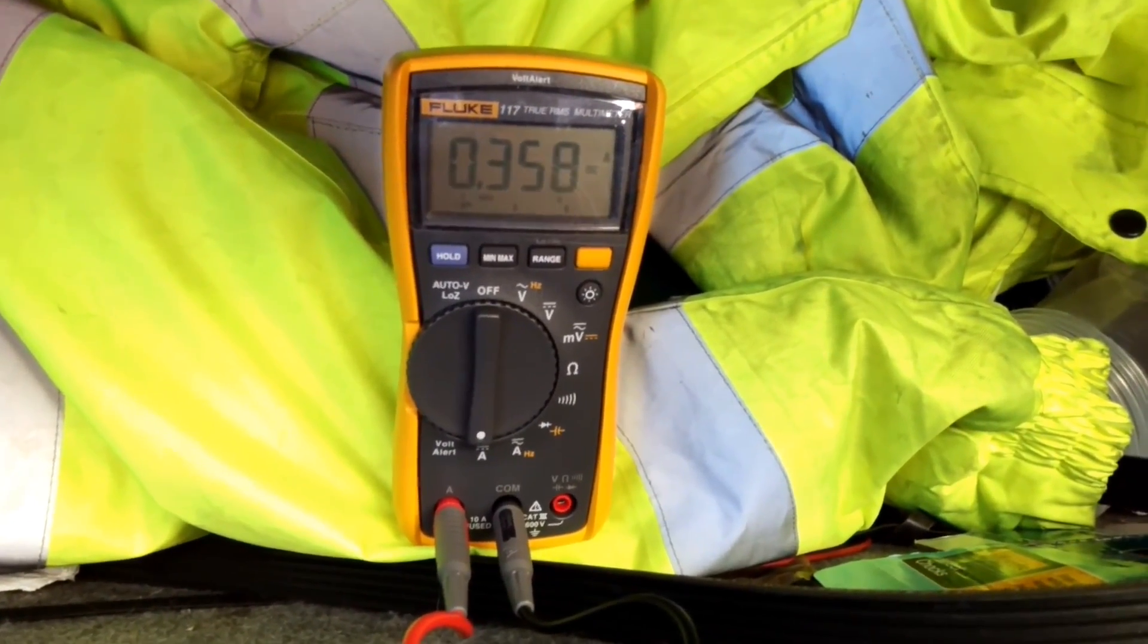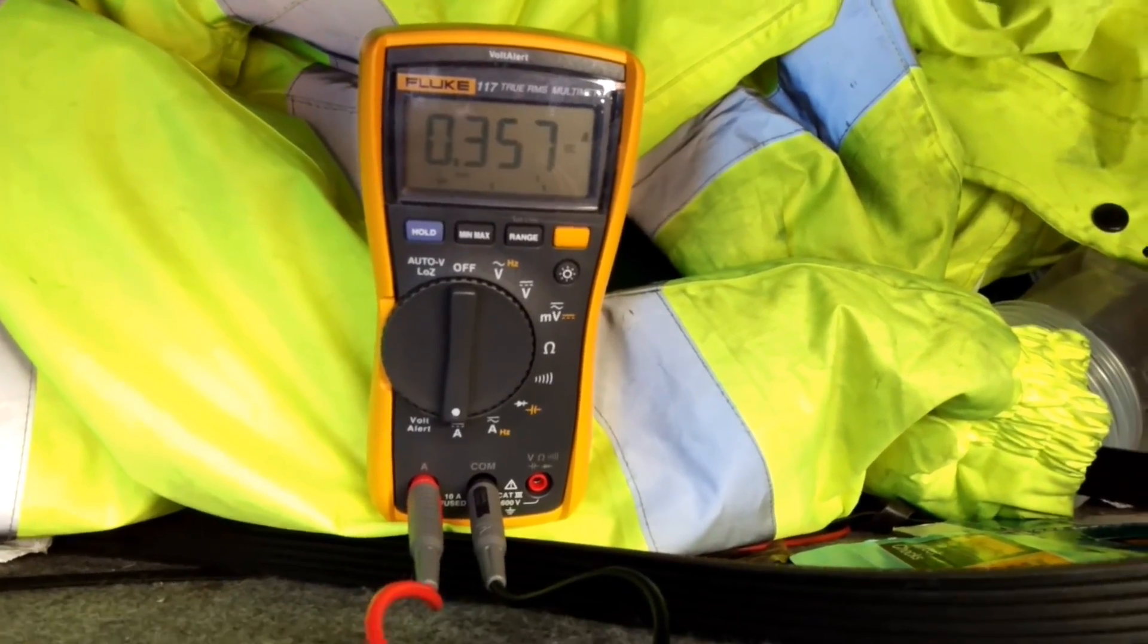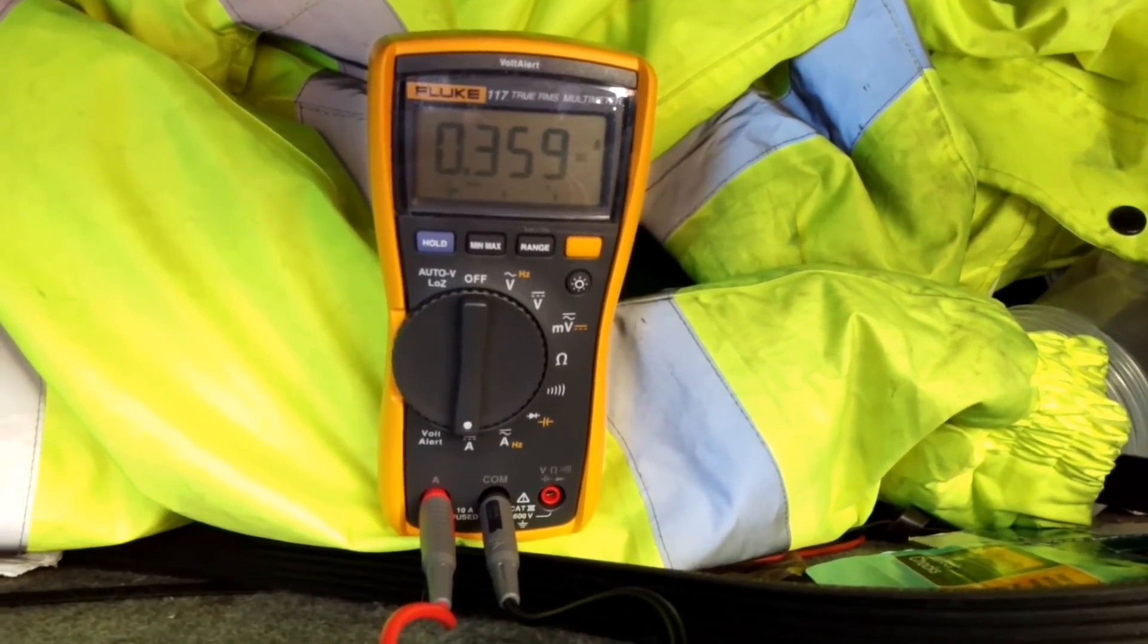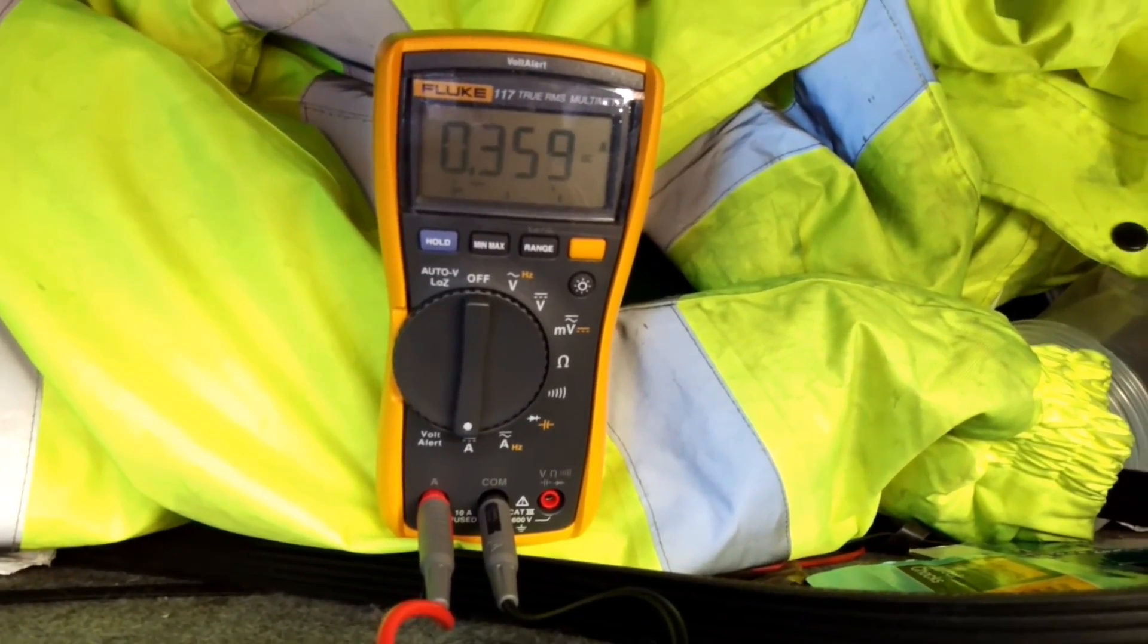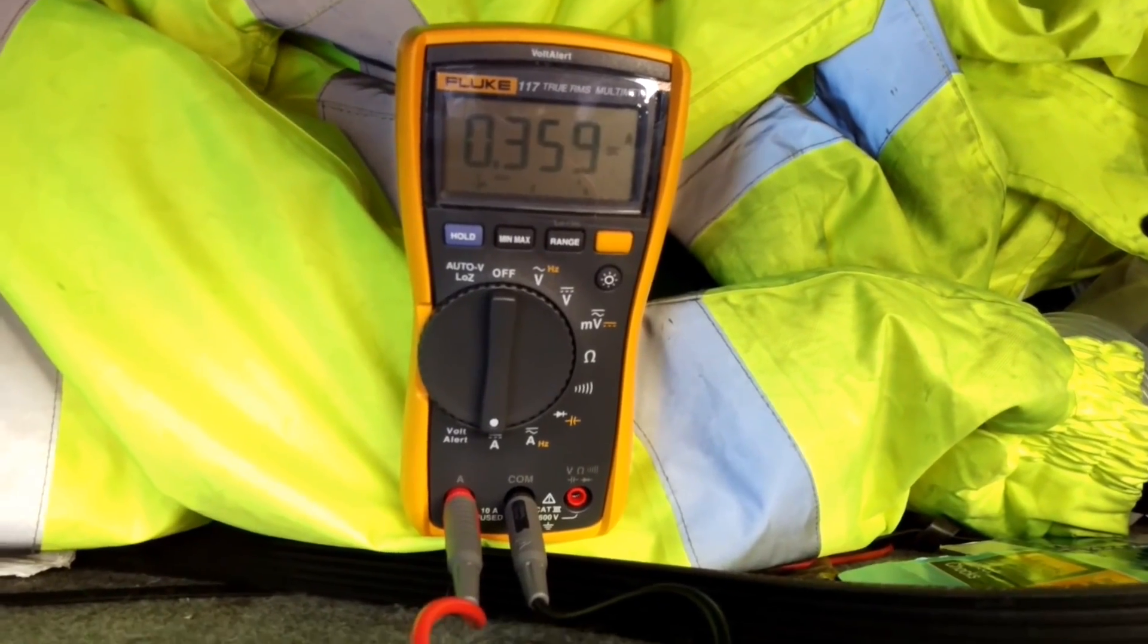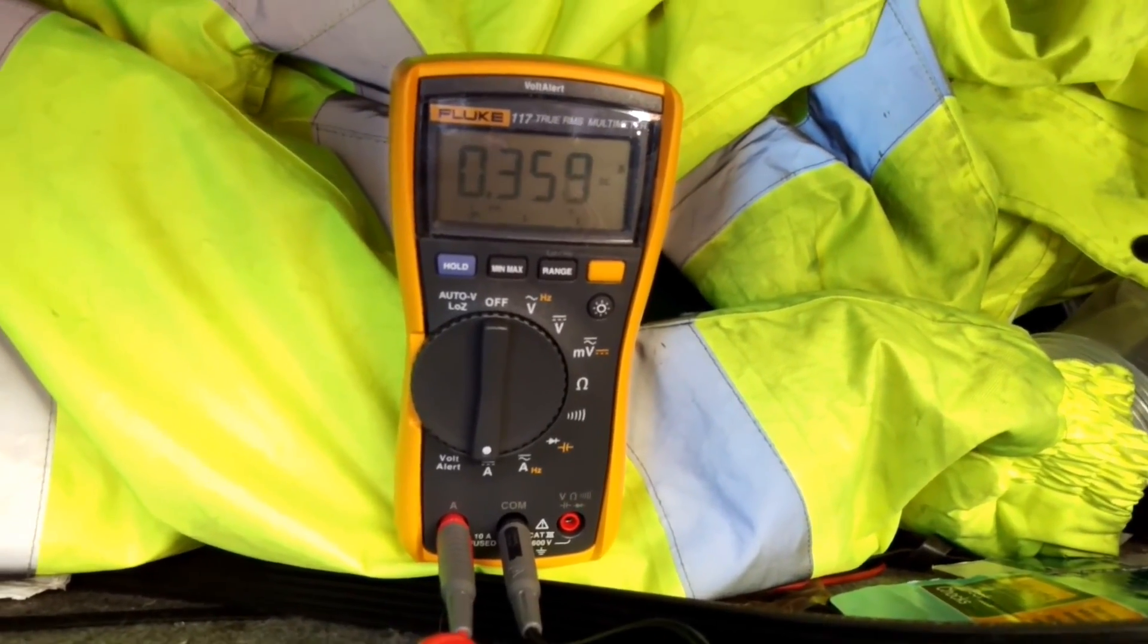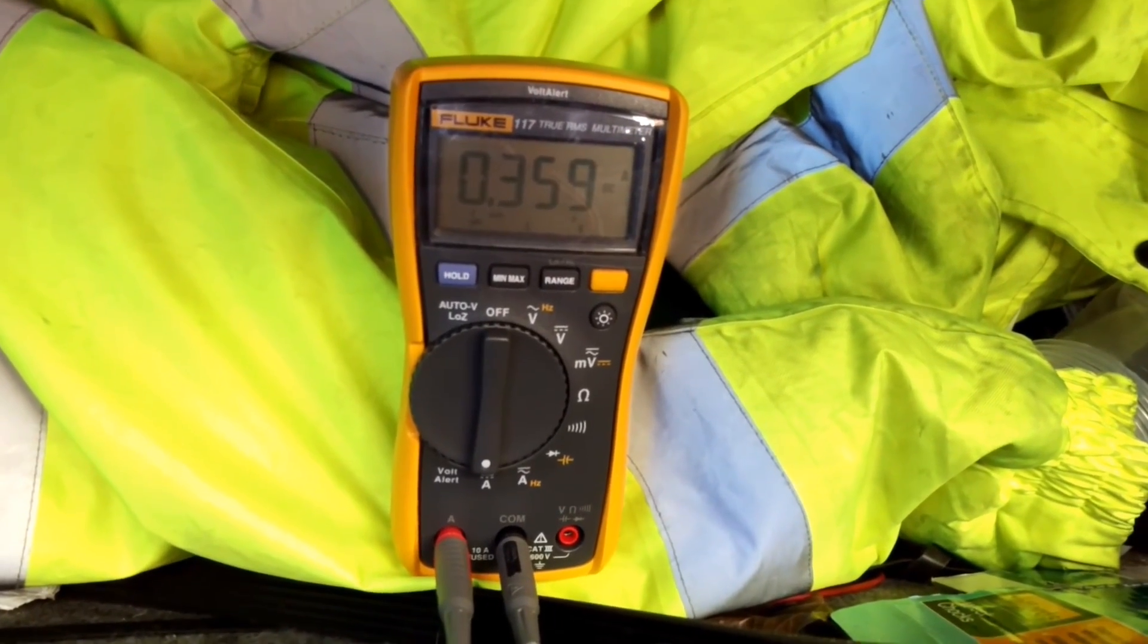About a year ago I did a parasitic drain test video and you've seen my Fluke measuring the current drain on a car battery. And you should always have some sort of drain on a modern car battery. So if you're not getting a reading on your multimeter, that doesn't mean that you've not got a drain. It could mean that you've got a problem with the meter.